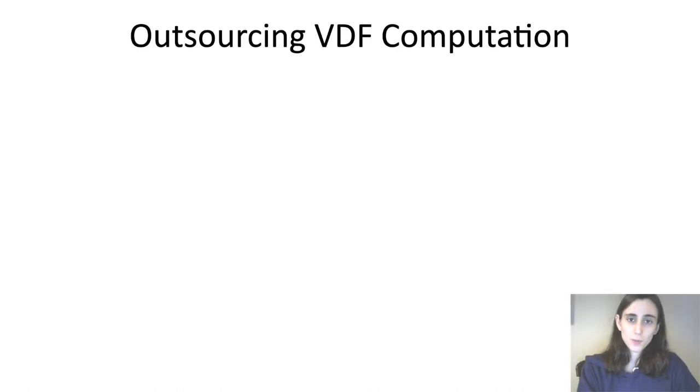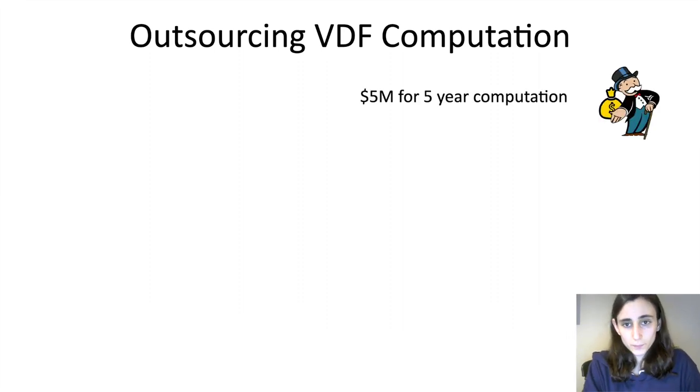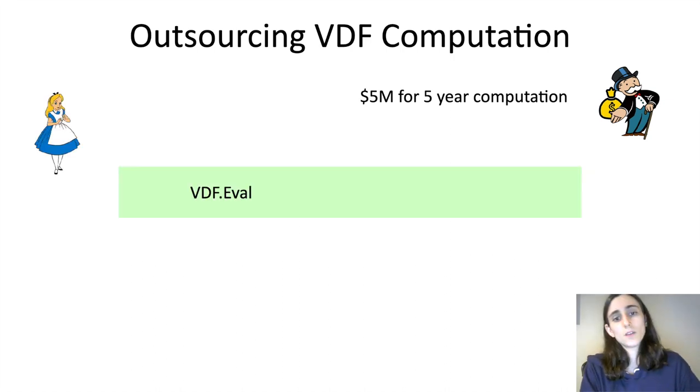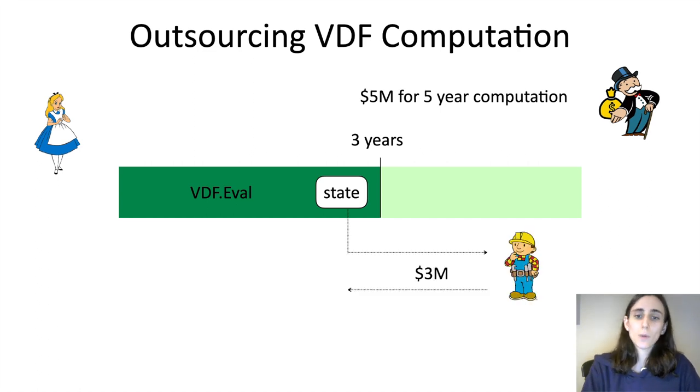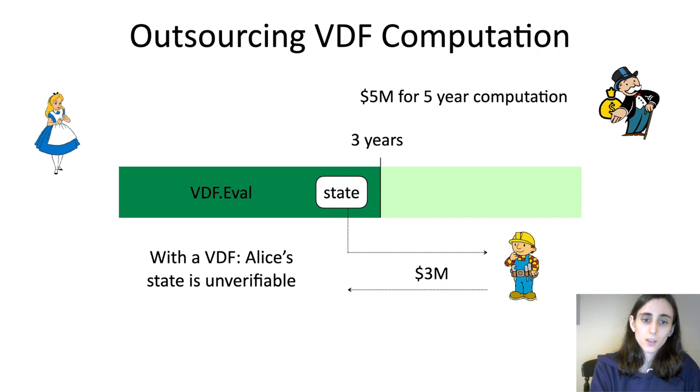To highlight the difference between VDFs and continuous VDFs, I want to talk about the following potential application of VDFs. Suppose there's someone that's offering $5 million to do a five-year VDF computation. And Alice comes along, she starts computing VDF.val, she's planning to do it for five years, but something comes up after three years. Maybe she runs out of money and she can't continue the computation anymore. So she has some state, but she hasn't finished the computation yet. Ideally, what we would like is for her to be able to sell her state to Bob for $3 million for the three years that she did, for Bob to be able to verify the state, and then continue the computation.